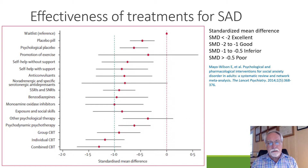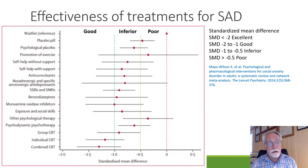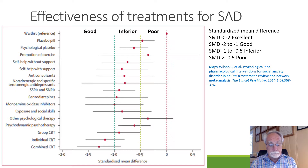This is a confidence interval graph looking at the standardized mean difference. These were different treatments compared from the waiting list — which did nothing for social anxiety — and placebo, through exercise, self-help groups, and anticonvulsants. Everything to the left of the first line reaching minus one was considered good.